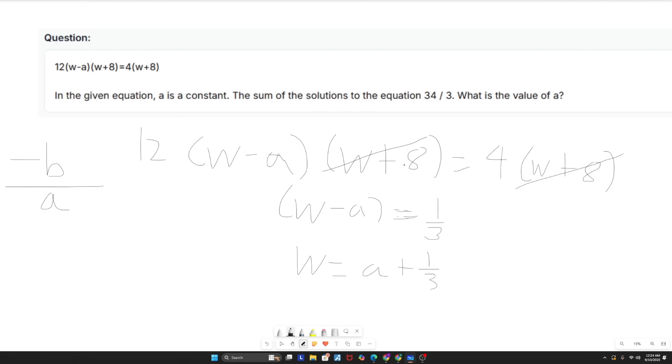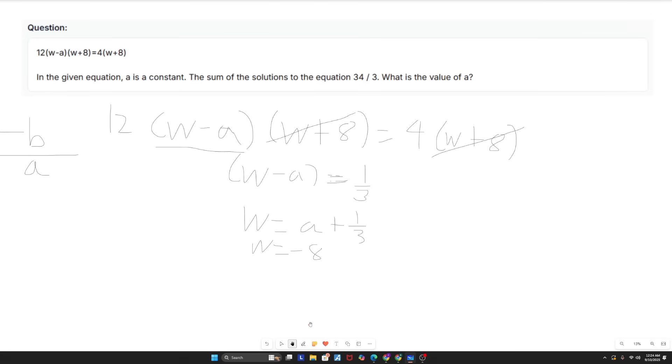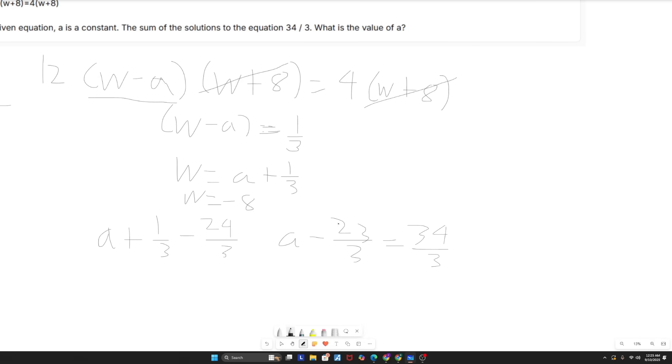But I also have W plus 8. If I plugged in negative 8 into W, I would get zero on both sides. And that would mean when I plug in negative 8, that is a root of my equation. So negative 8 is also one of my solutions. So W equals A plus one over three and W equals negative 8 are my two solutions. And I'll just cancel this W plus A out in order to focus on my other parentheses, my other solution. So now what does that mean? The sum of the solutions. So A plus one over three, that's one solution, minus 8 or minus 24 over 3 is going to give me A minus 23 over 3. And that is going to be equal to 34 over 3. This is my sum of solutions. So now all I have to do is just basic algebra from here. So I'm going to add 23 over 3 to both sides, giving me A equals 57 over 3. That simplifies to 19, which is going to be my final answer.